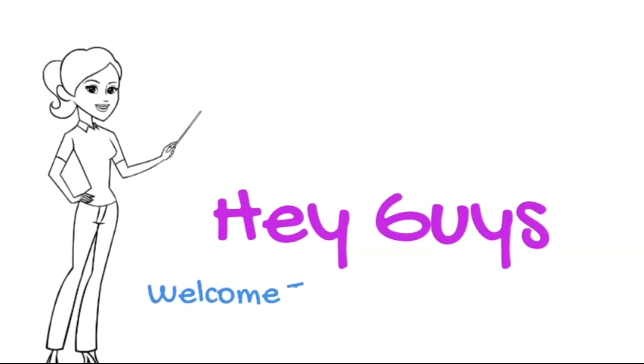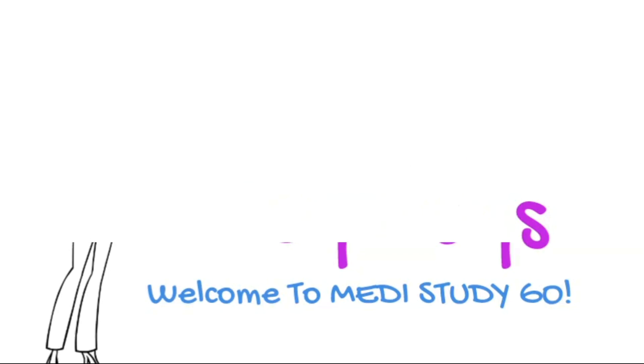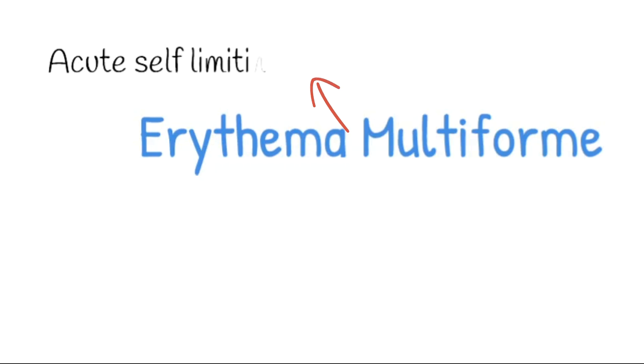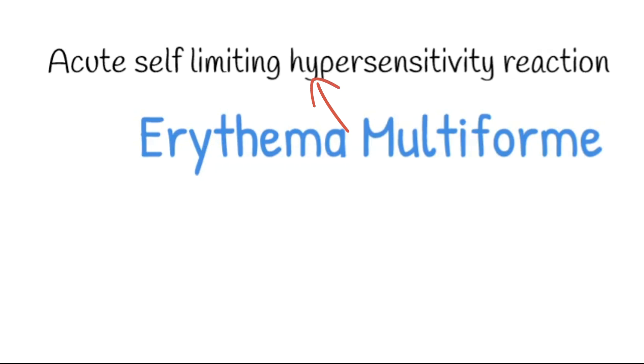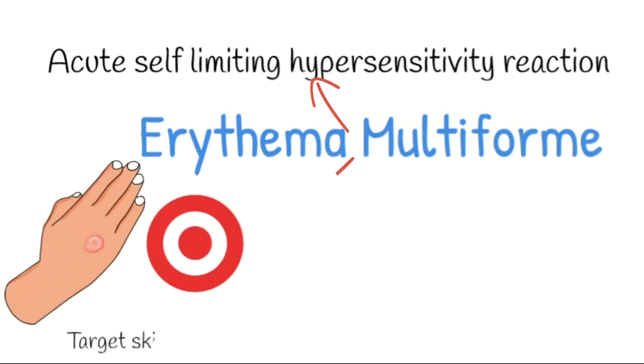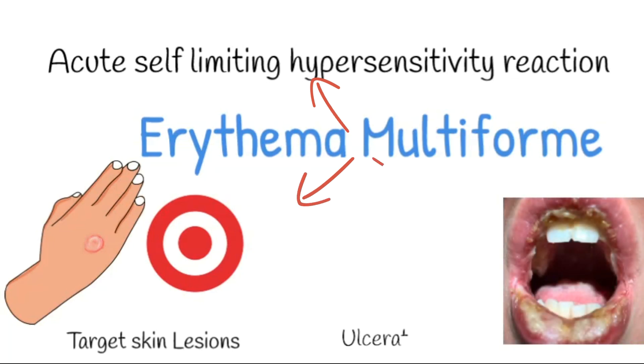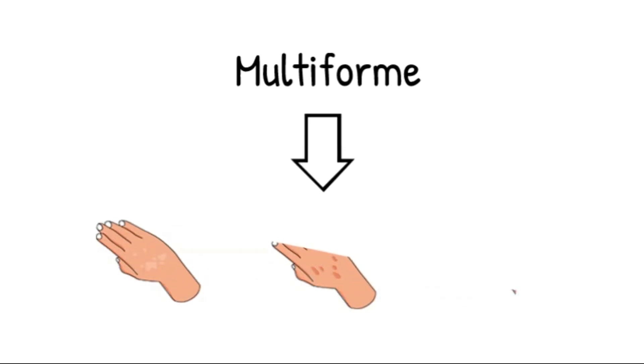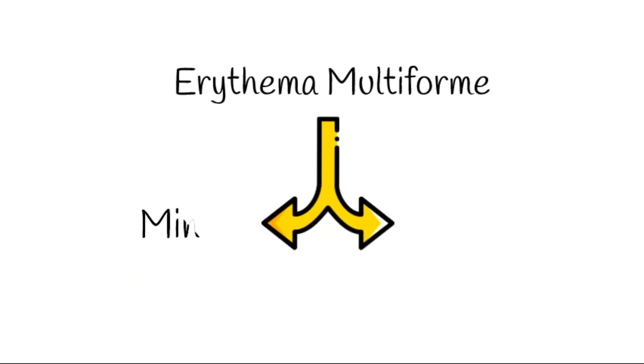Hi guys, welcome to Medistudy Go. Today we will be talking about erythema multiforme. Erythema multiforme is an acute self-limiting hypersensitivity reaction characterized by target skin lesions and ulcerative oral lesions. The term multiforme has been used to indicate the multiple and varied clinical appearances of this disease. Erythema multiforme has been divided into two subtypes: a minor form and a major form.